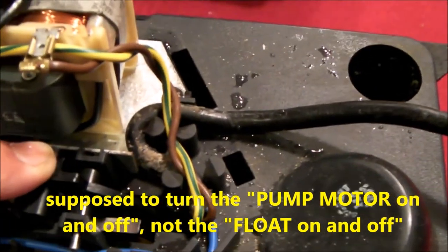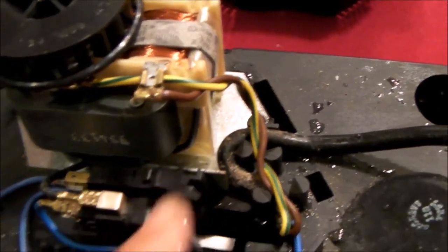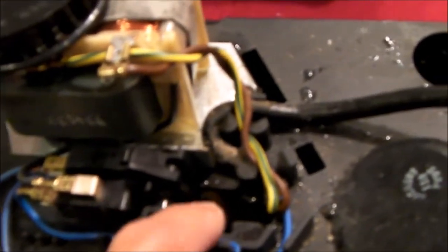And this one here is the float switch that is supposed to turn the pump on and off. When the water level gets high, pump comes on. Water level gets low, pump goes off. So what's happened here is this float switch has failed, and this is not the first time.